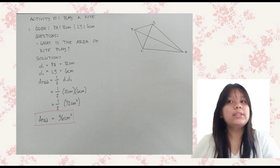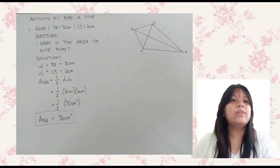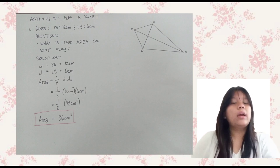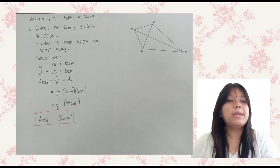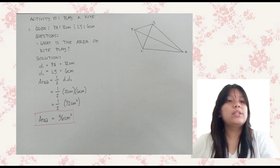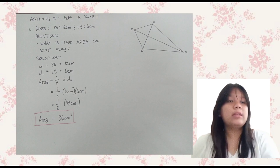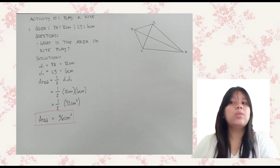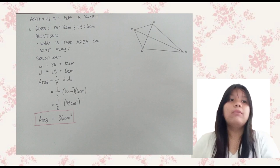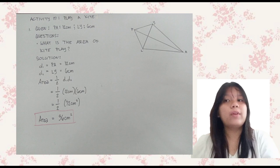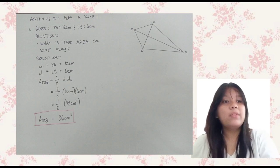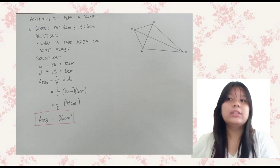Question 3: How did you solve for its area? To solve the area of kite PLANE, I followed these steps: 1. Identify the diagonals of the kite, which are PA and LY. 2. Apply the formula for the area of a kite: half the product of its diagonals. 3. Substitute the given values into the formula: Area equals one-half times diagonal one times diagonal two. 4. Perform the multiplication and division to find the area. By following these steps, I found the area of kite PLANE is 36 square centimeters.